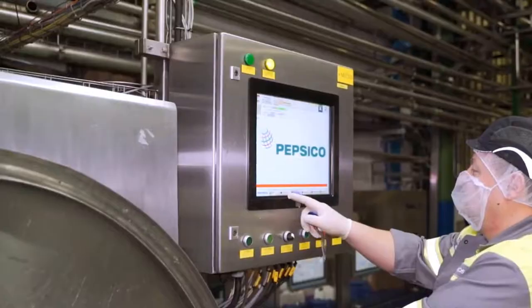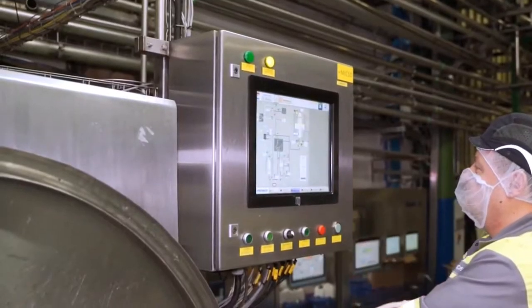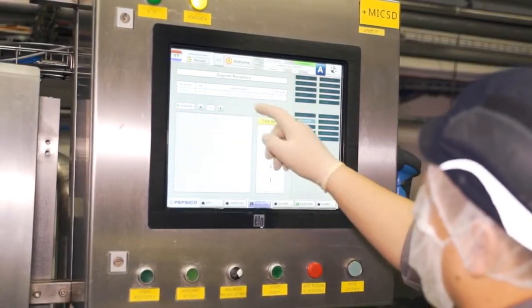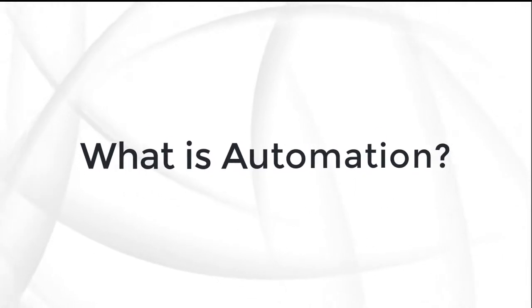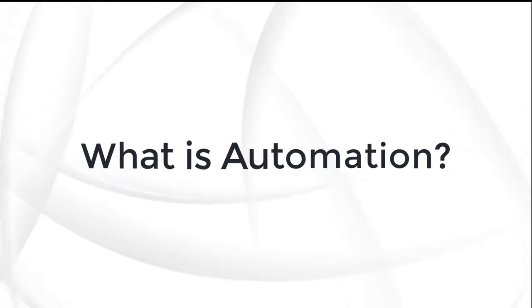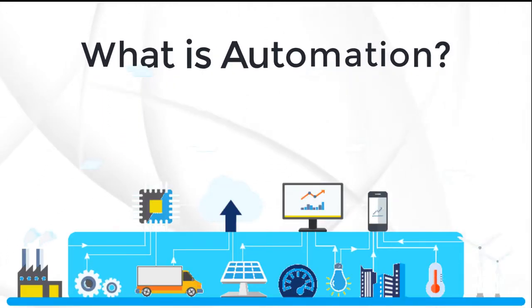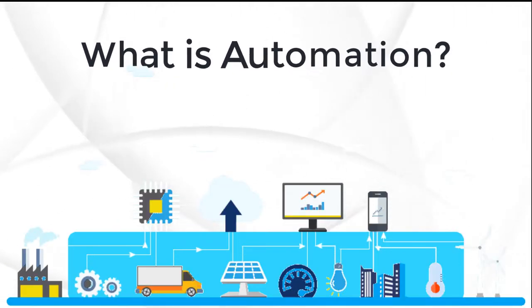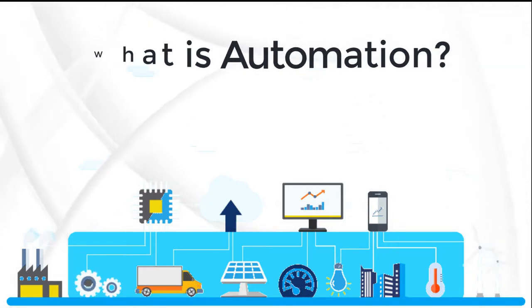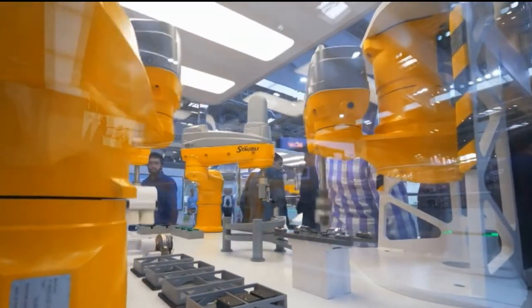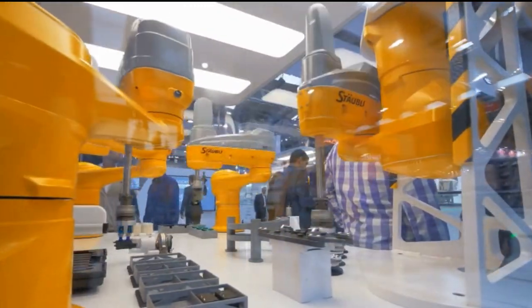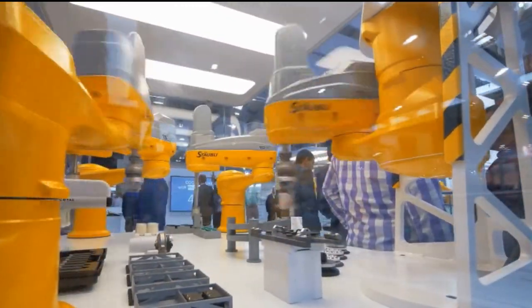But how is it possible? Everything we will know in this course. Let's start. First of all, what is automation? The word automation — 'auto' means self, 'motive' means action or process of moving. So automation means self-processing, taking any action without human intervention directly.